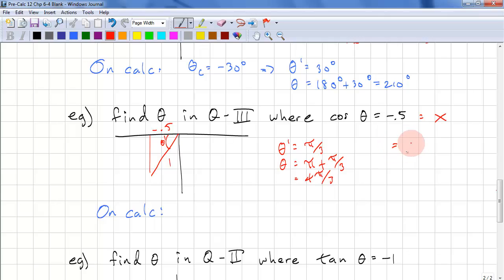In degrees, we have 60 degrees. 180 plus 60. And that's 240 degrees.